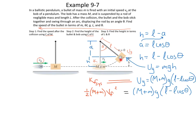We used conservation of energy from just after the collision to the top of the swing, because gravity is a conservative force. However, we cannot use conservation of energy to find the initial velocity of the bullet, because energy was not conserved — this was an inelastic collision. In inelastic collisions, energy is not conserved. So we have to use conservation of momentum, which is always conserved, to figure out the initial velocity.